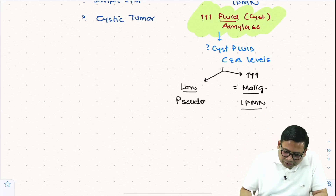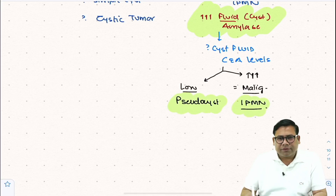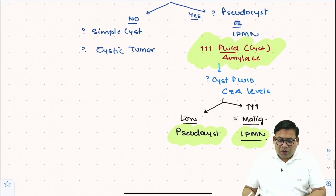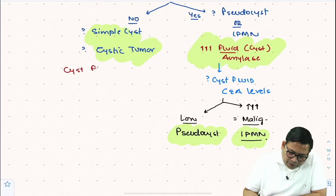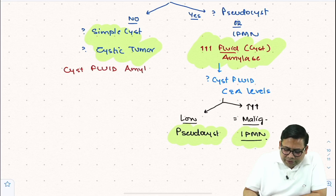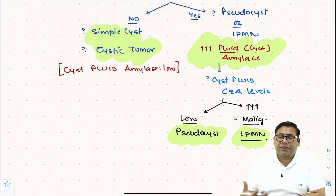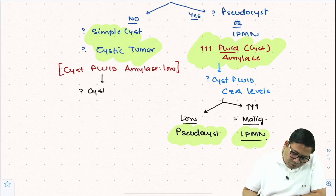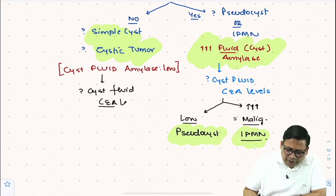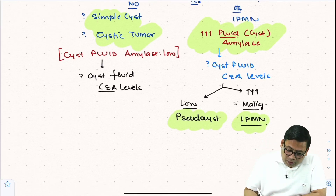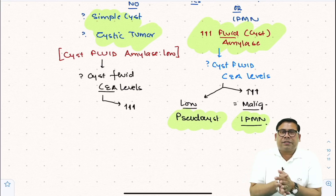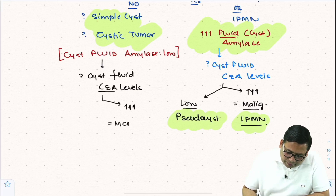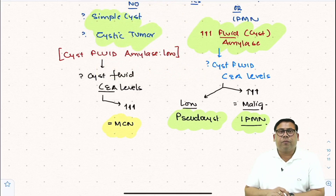Now moving to the branch where both amylase and CEA are evaluated when no pancreatitis history exists: the cyst fluid amylase levels are low in this category. If CEA levels are elevated here, that indicates malignancy — specifically MCN, mucinous cystic neoplasm, which shows an adenoma-to-carcinoma sequence. Thus the diagnosis of MCN is confirmed.